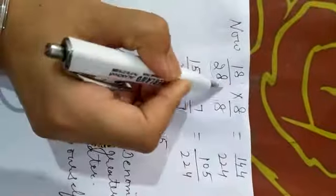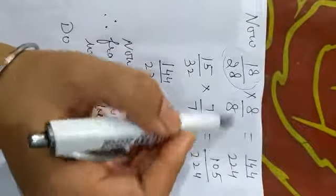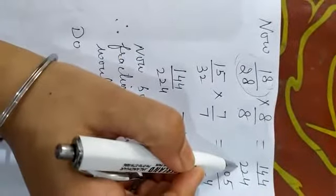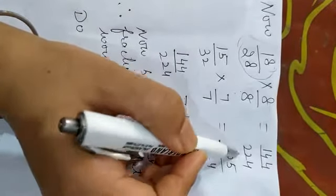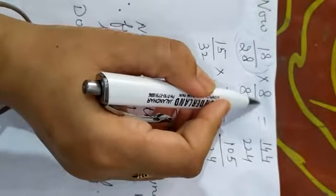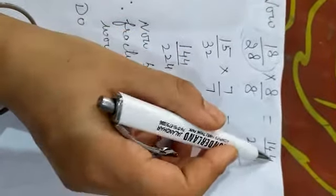LCM will be 224. Now we have to consider the first term to make the denominator equal to 224. 28 multiply with 8 becomes 224. The same in the numerator: multiply with 8, it will be 144.